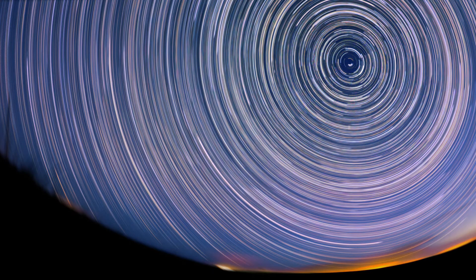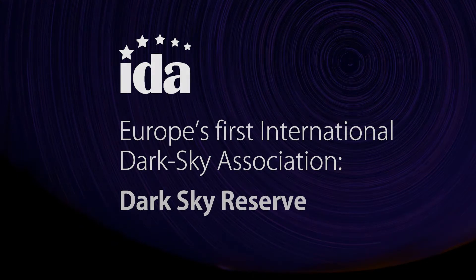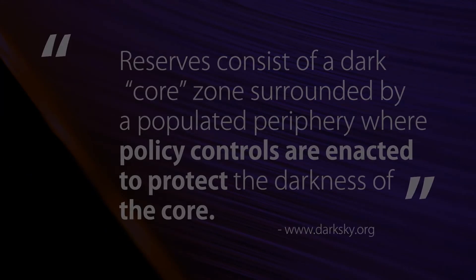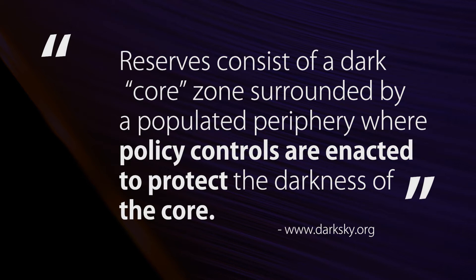Exmoor National Park received its dark sky accreditation in 2011. Basically what it means is that the amount of lighting going up into the sky is controlled and it enables us to see many more stars from Exmoor than we would see from a town or a city.